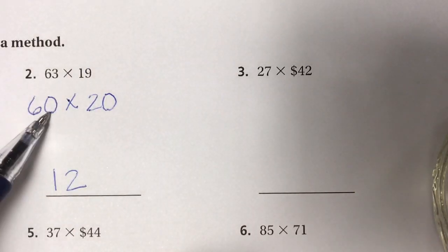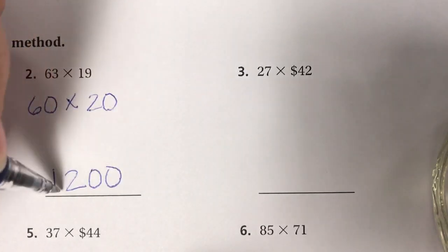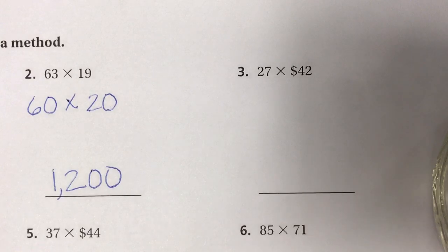I had covered up two zeros, so I'm going to add those back on to my estimate. My estimate for 63 times 19 is 1,200.